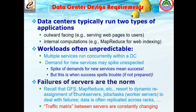These are the basic design requirements for a data center. Data centers have two types of applications: outward-facing (serving web pages to users from the internet) and internal components like MapReduce for web indexing. These workloads are often unpredictable — we cannot predict how much workload enters the data center via the core router. Multiple services run concurrently, with huge demand for some and less for others. Success spikes demand for new services, but this can spell trouble if not prepared.